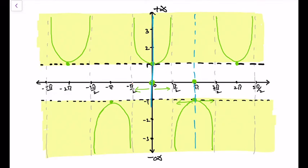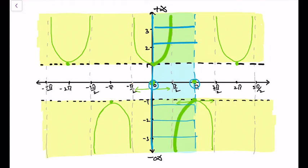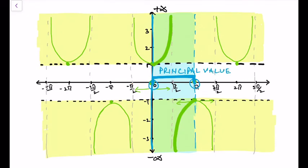Let the reduced domain be from 0 to π. Now doing the horizontal line test between this domain, the function passes the horizontal line test. The reduced domain is from 0 to π where π/2 is excluded because the function is not defined there. This interval is called the principal value.